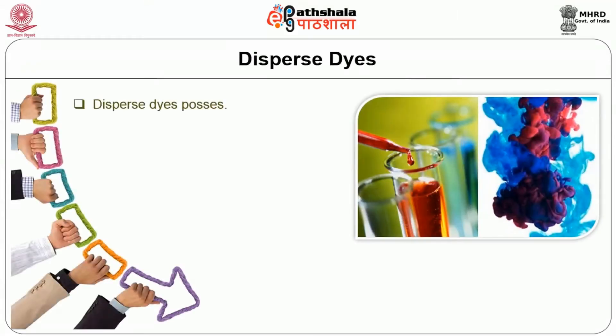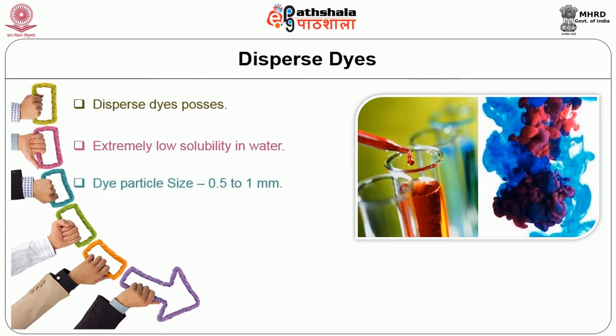Disperse dyes are extremely low soluble in water and are in fine dispersed state. The particle size of the dye is 0.5 to 1 micrometer — very very small — and the particles of the dye get dispersed in water. The molecular weight range is 400 to 600 and it is a non-ionic dye with no polar groups, hence sparingly soluble or insoluble in water.